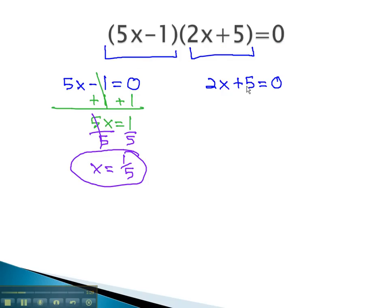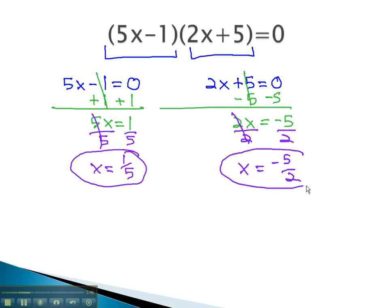Similarly, we can solve the second factor by subtracting 5 from both sides. This gives us 2x equals negative 5. Finally, dividing both sides by 2, we find out x could be the fraction negative 5 halves. This means when x is negative 5 halves, the second factor equals 0, times the first, will always be 0.